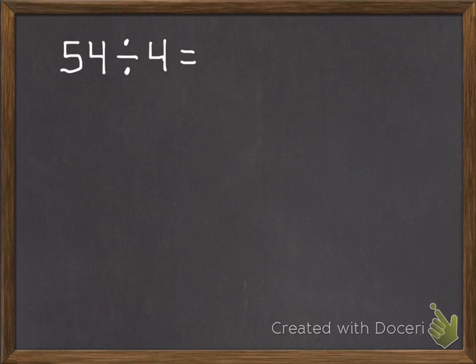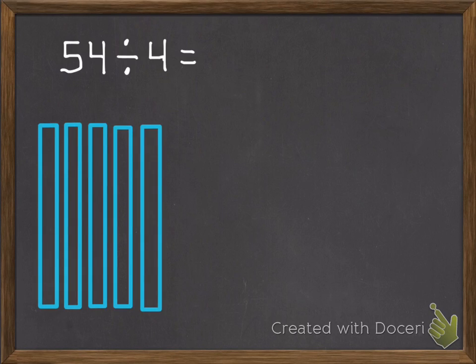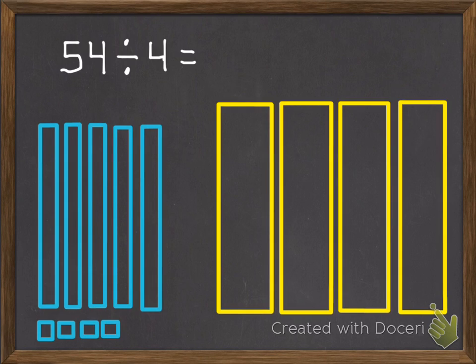Here's a second example. 54 divided by 4. So this time we have 54, and we're dividing them into 4 groups.